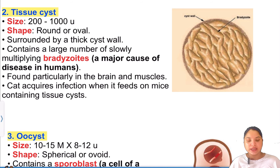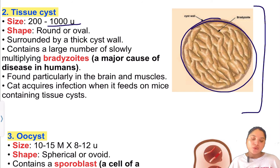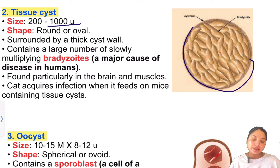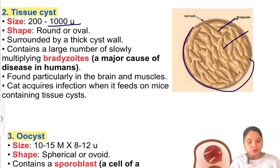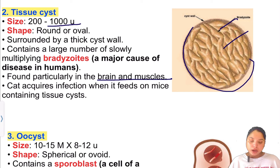The Tissue cyst is the second stage. Its size is 200 to 1000 microns. The shape is round to oval, surrounded by a thick cyst wall. It contains a large number of slowly multiplying bradyzoites. This is what causes disease in human beings and is found particularly in the brain and muscles.